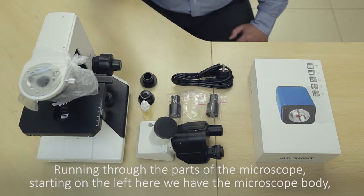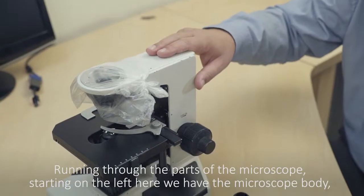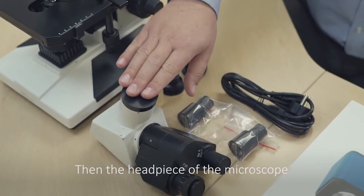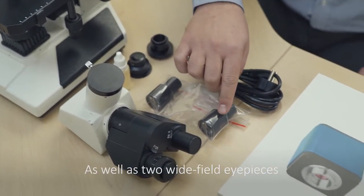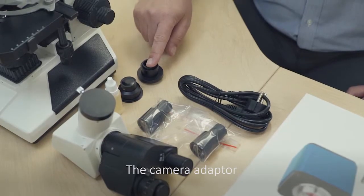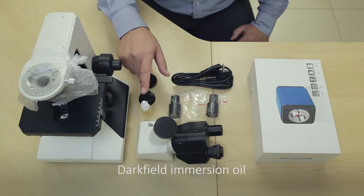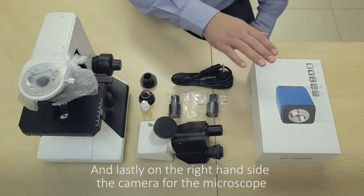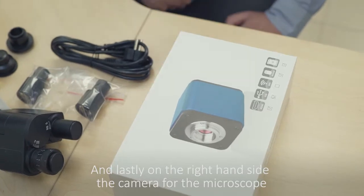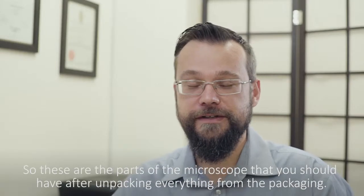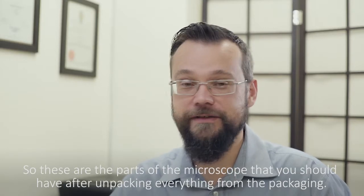Running through the parts of the microscope, starting on the left here we have the microscope body, then the head piece of the microscope, as well as two wide field eyepieces, the power supply cable for the microscope, the camera adapter, darkfield condenser, darkfield immersion oil, and lastly on the right hand side here the camera for the microscope. These are the parts of the microscope that you should have after unpacking everything from the packaging.